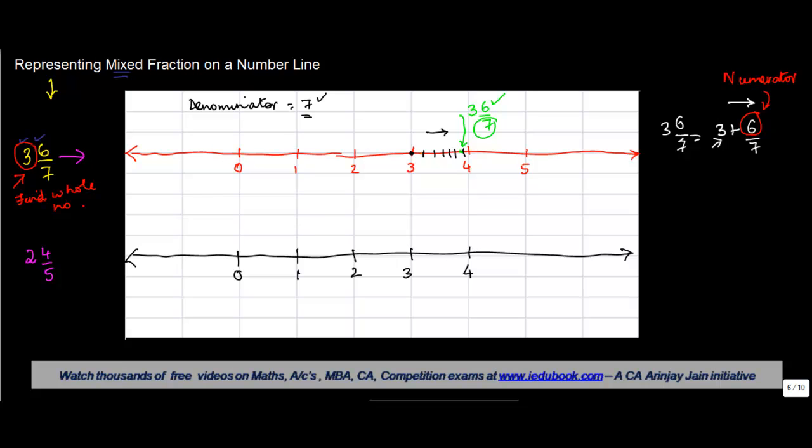In this case, what is the whole number? The whole number is 2. So this number that we are looking for has to lie after this point on the right side because this is 2 plus 4/5.